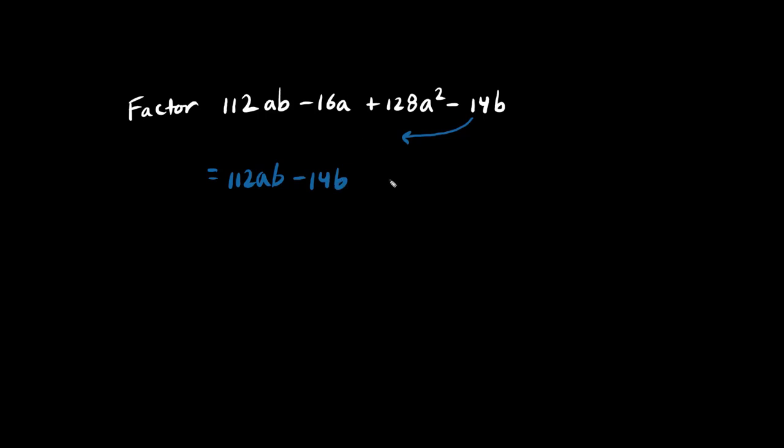And so what we have now is negative 16a plus 128a squared. Now, let's focus on this group. What is the GCF of 112 and 14? This is going to take a bit of effort, and it's nice to have a calculator. But this L technique will help you find the GCF as well.